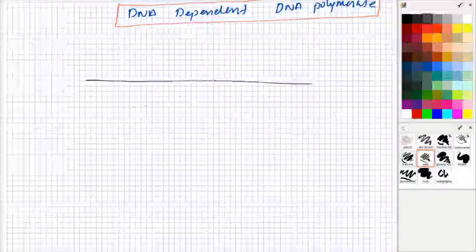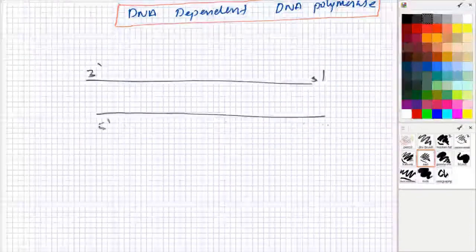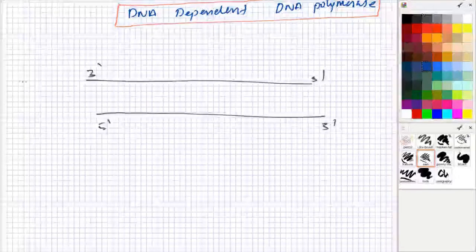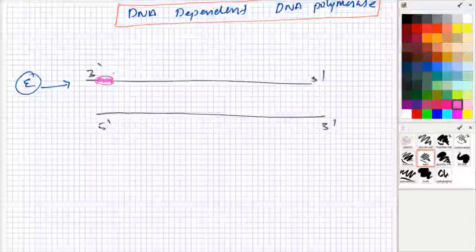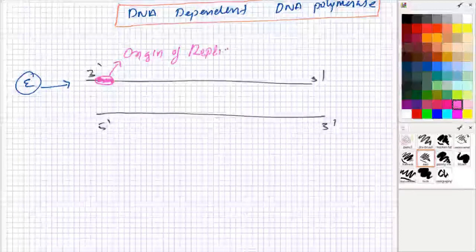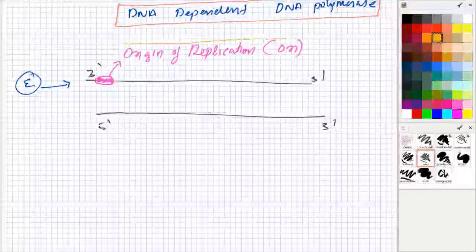Next, we will see how replication is going on. You can see there are two old DNA strands — 3' to 5' and 5' to 3'. Our enzyme, DNA dependent DNA polymerase, is coming here. But one problem is that DNA dependent DNA polymerase cannot start on its own. There is a separate region known as origin of replication — that is a recognition sequence for the enzyme — and in short it is known as ORI. So the first thing we need is DNA dependent DNA polymerase, and the second thing is ORI.